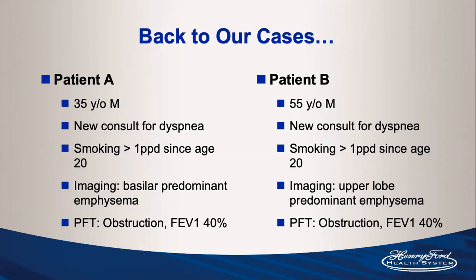Wrapping up by returning to our cases: for Patient A, I've provided information about other systems that may be involved, additional questions to ask, testing needed, how to diagnose, and how to treat. For Patient B, at least having alpha-1 antitrypsin on your radar and potentially testing them follows through on GOLD COPD guidelines as well as ATS recommendations.